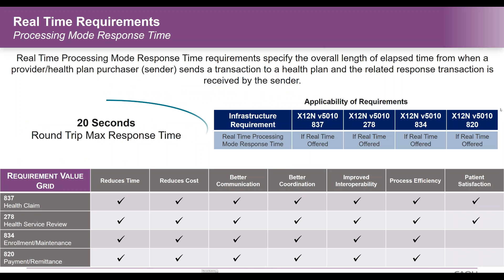Since we have requirements for batch, we also have requirements for real-time. A good example might be that a provider may send a batch of claims to their clearinghouse. That clearinghouse parses the batch and submits each individual claim to its connected trading partner in real-time. So that health plan would respond back to the clearinghouse in real-time, within 20 seconds, with a 999 acknowledgment for the 837 transaction. By processing these transactions in real-time, the entire value proposition is realized: reducing time and cost, better communication and coordination, and improved efficiencies and interoperability.